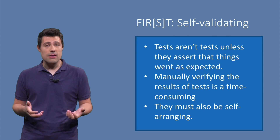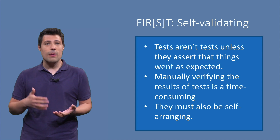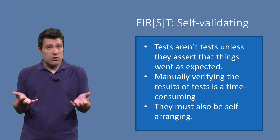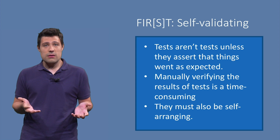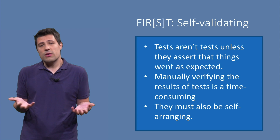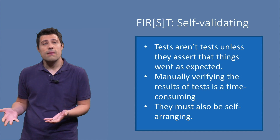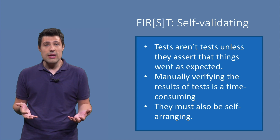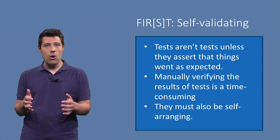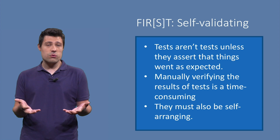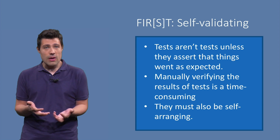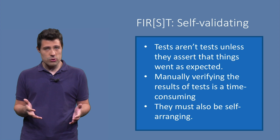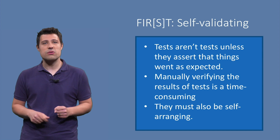S stands for self-validating. Tests are only automated tests if they automatically assert that things went as expected. So if you have a test without an assertion, in any way that you can write an assertion, then this is not a good automated test. We don't want to manually verify the results of tests. The test has to be self-validating. And as long as we're discussing self-validating, a test should also be self-arranging — meaning the test is responsible for making sure that all the required initial state is there before the test runs. With the database example, if my test needs a database set up with certain data, the test should be responsible for doing it. So self-validating and self-arranging tests are fundamental.